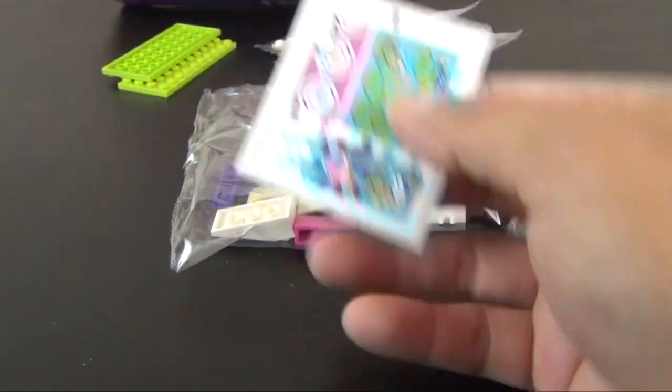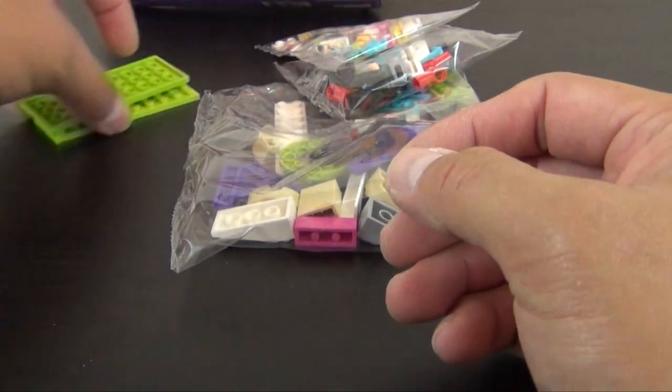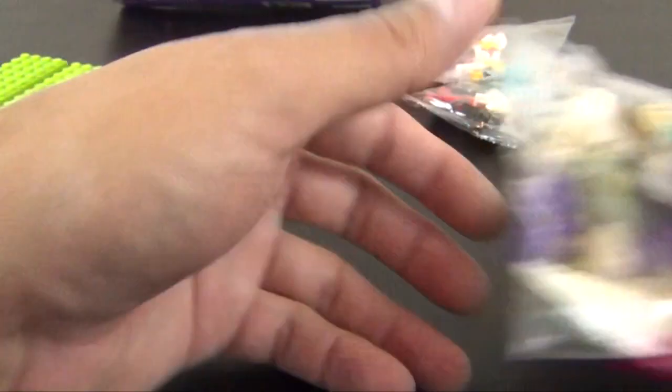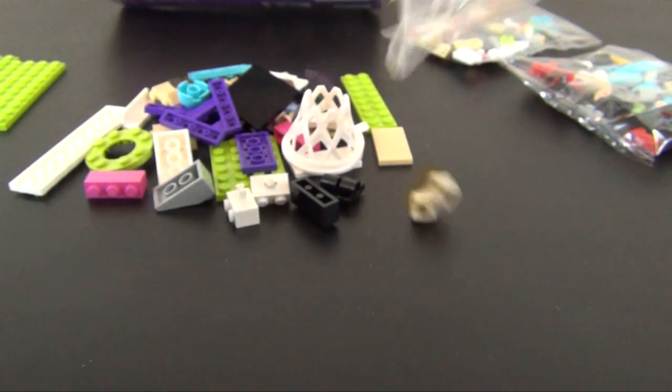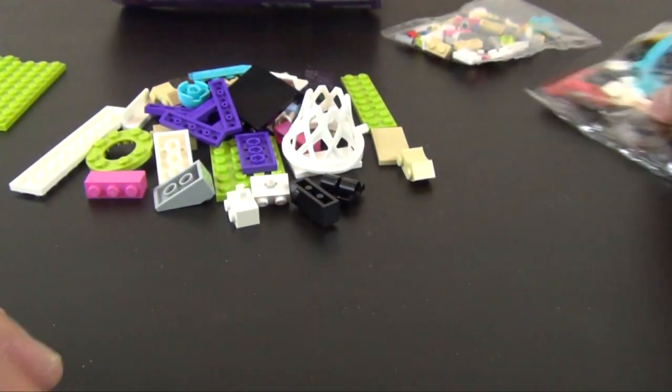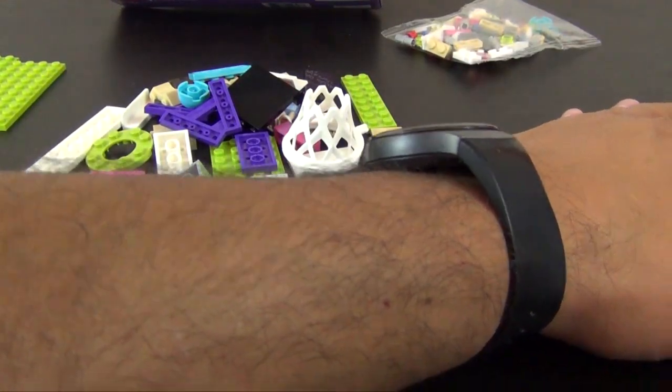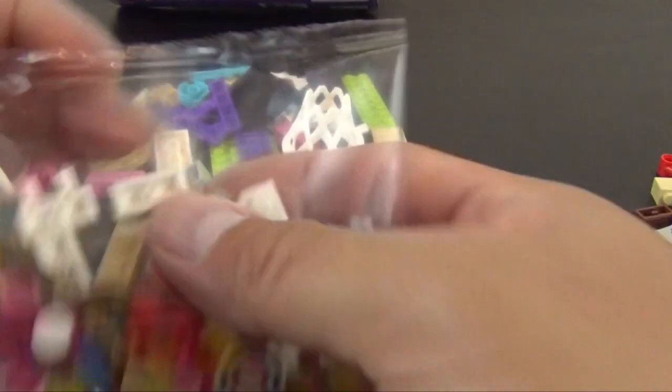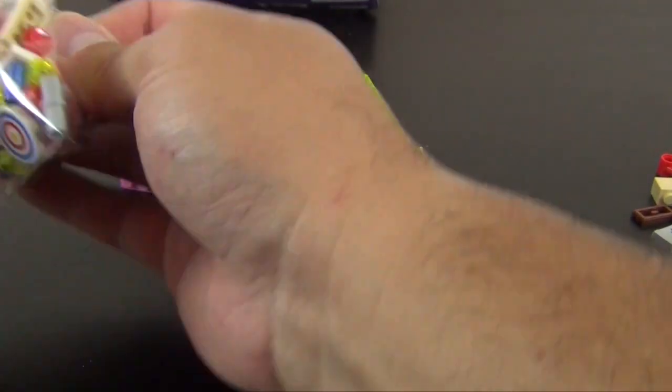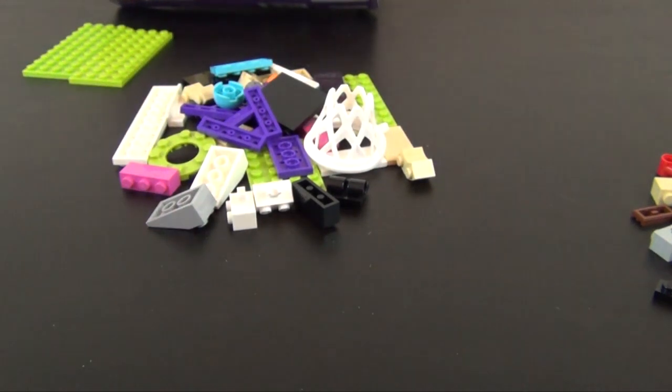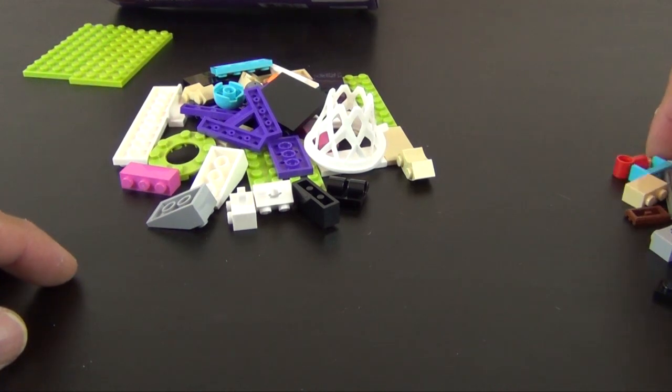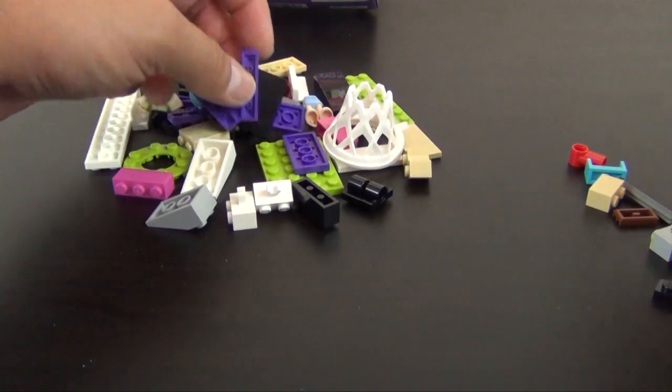We have a small sticker sheet, a couple loose plates, and then our bags of parts. A large bag there, a bag of medium parts, and then our small bag of parts. I'll put them on this side. Where do we begin? Let's begin with the mini doll.